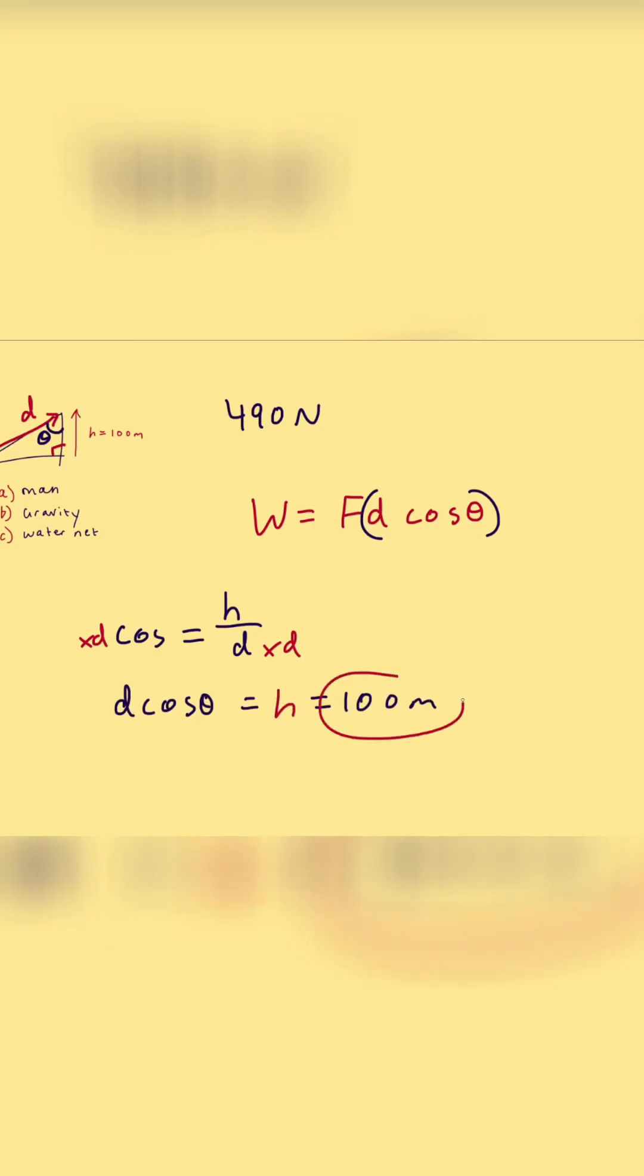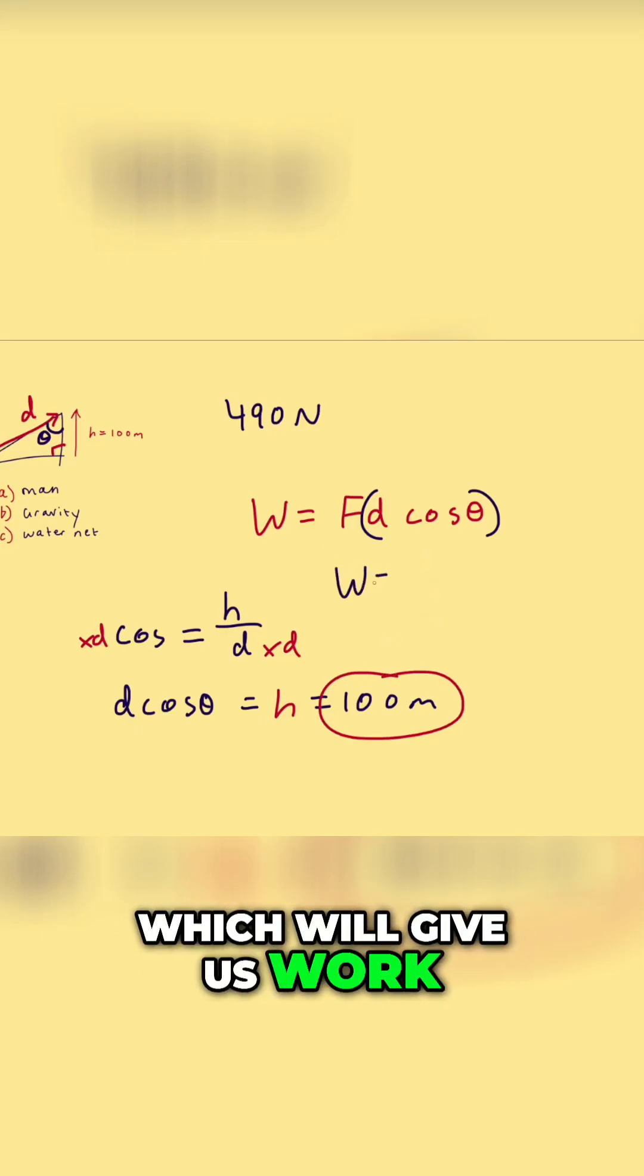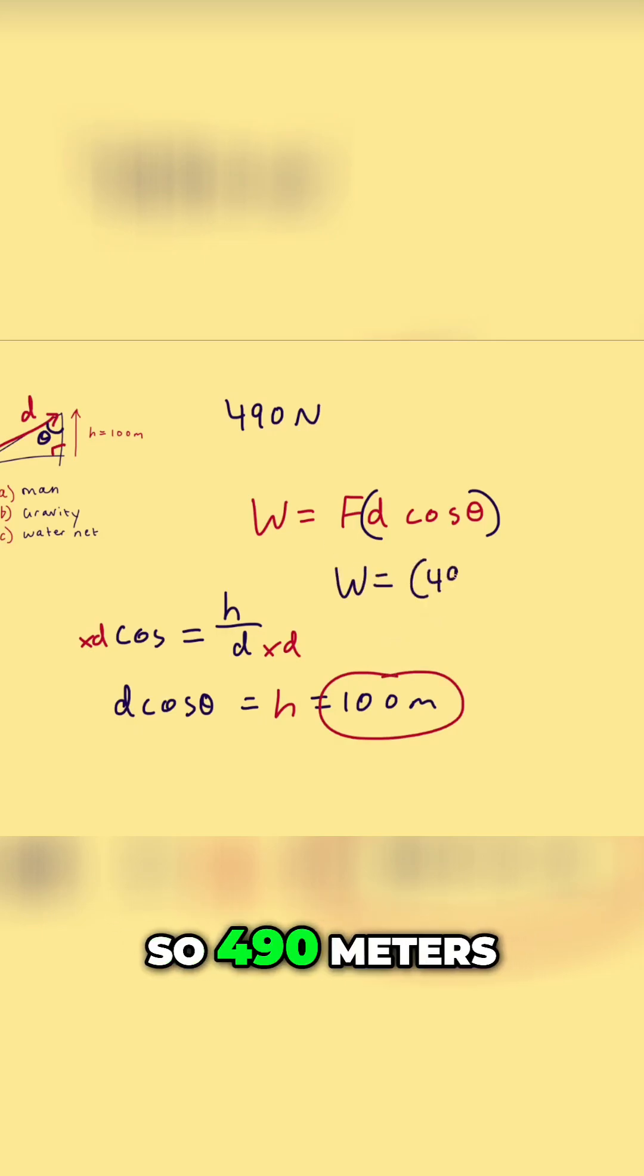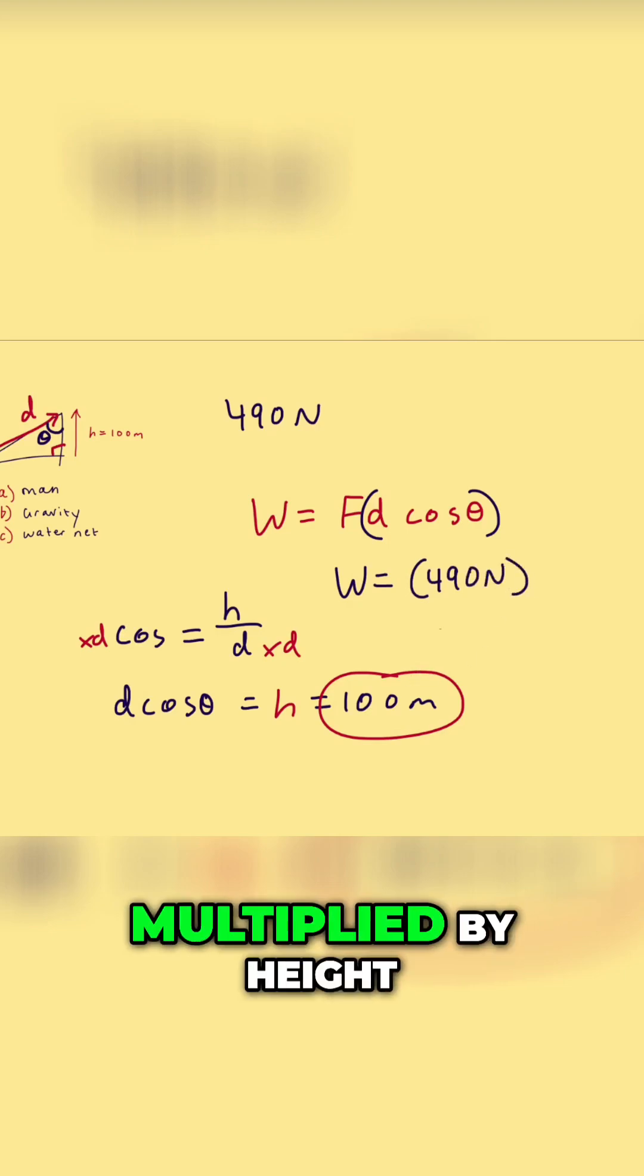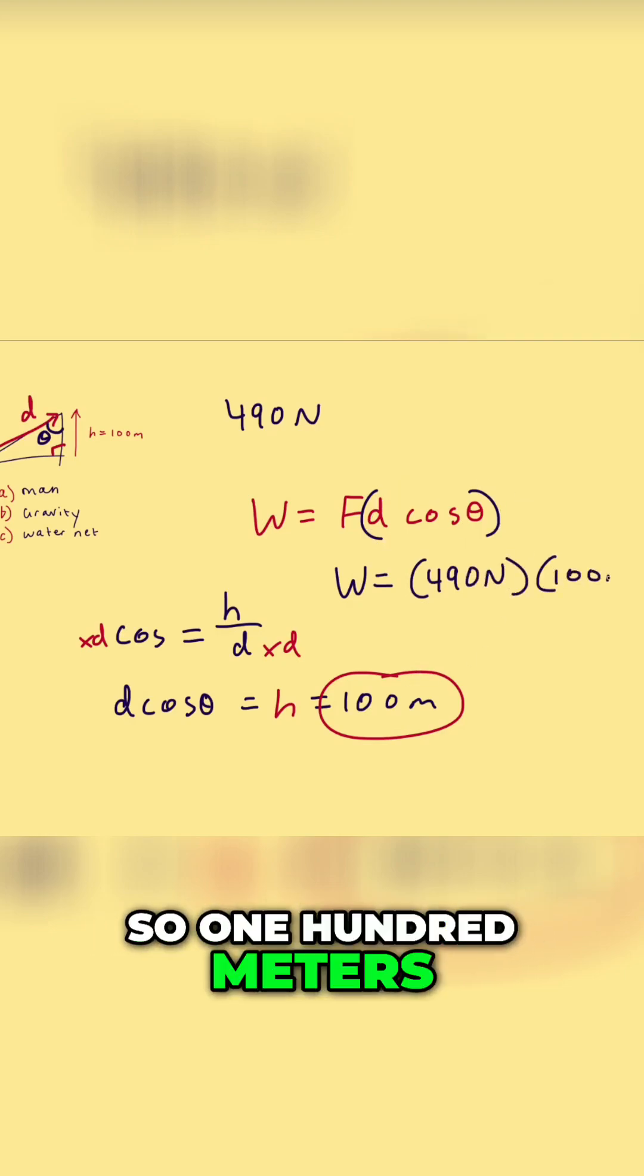That means we can plug in height for D cosine, which will give us work equals force, so 490 units, multiplied by height, so 100 meters.